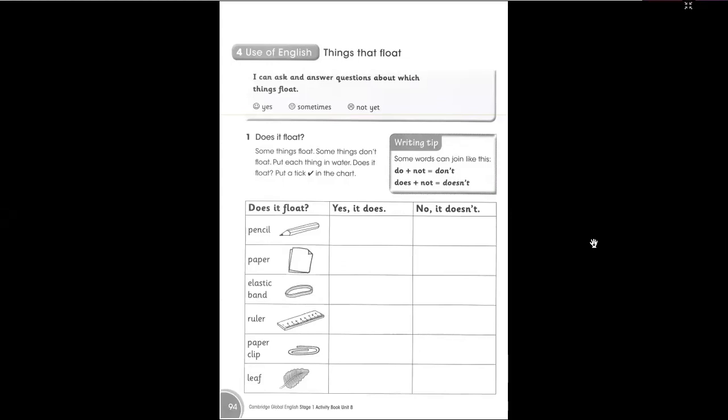Question number one: some things float, some things do not float. Put each thing in water, does it float, put a tick in the chart. Writing tip: some verbs can join like this, do plus not equals don't, does plus not equals doesn't.